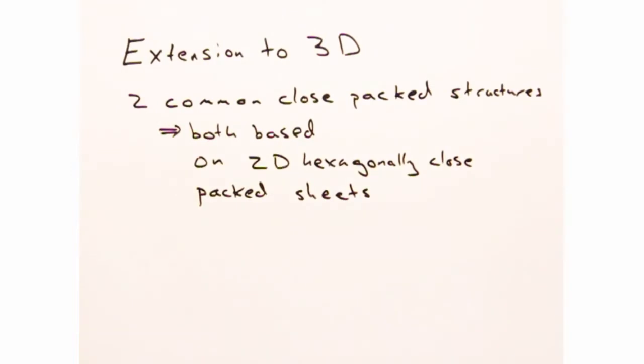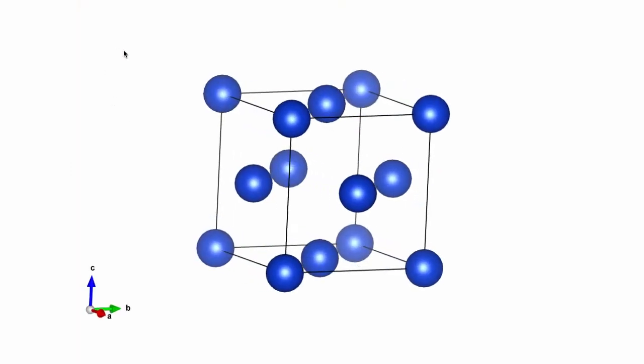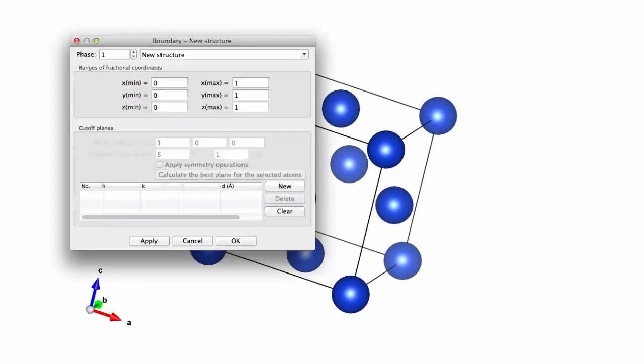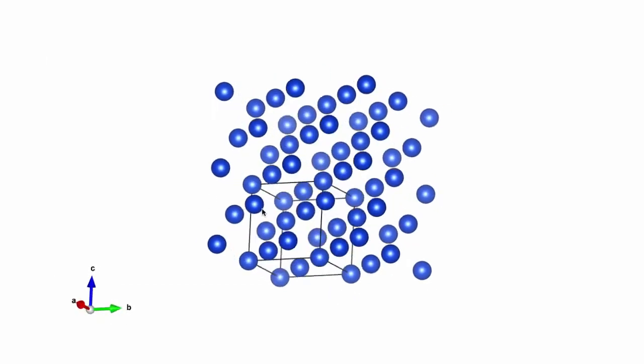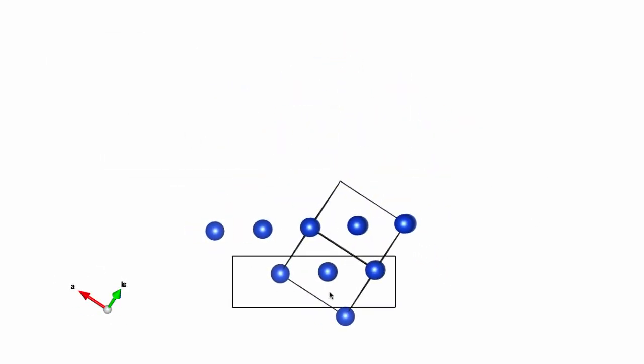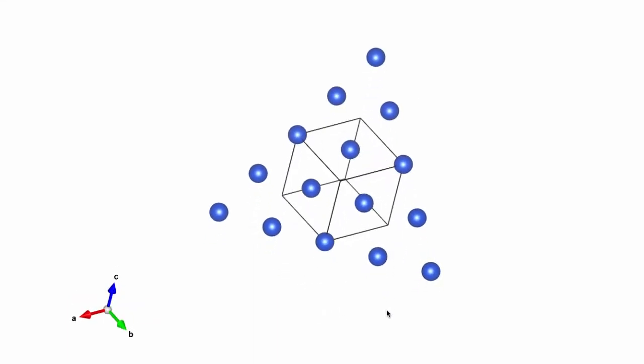The only difference being how they're stacked? Exactly. This is best seen in an example. In this video, I've taken an FCC structure and expanded the cell boundaries. Now I want to get rid of the excess atoms until I'm left with those along the body diagonal. If we look down at these atoms as so, can you see the hexagonal pattern?